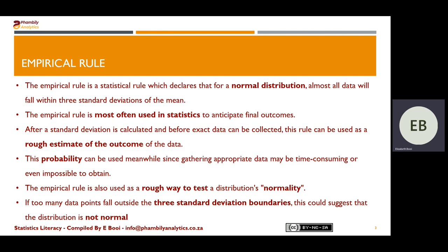The probability can be used meanwhile gathering appropriate data may be time consuming or even impossible to obtain. The empirical rule is also used as a rough way to test the distribution's normality — if too many data points fall outside of the three standard deviation boundaries, this could suggest that the distribution is not normal.